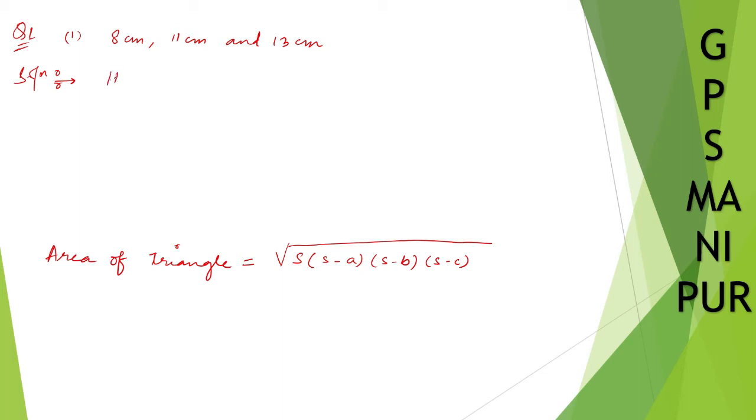Now here A is 8 cm, B given is 11 cm and C is 13 cm. In the formula, formula has mentioned S. What is S?